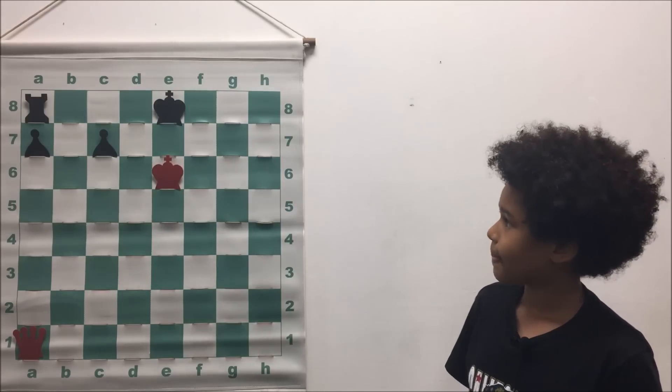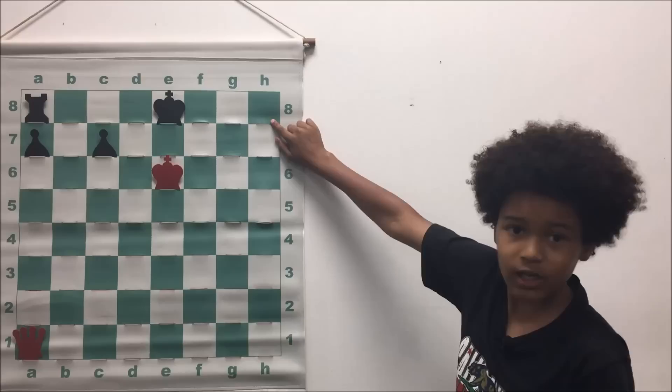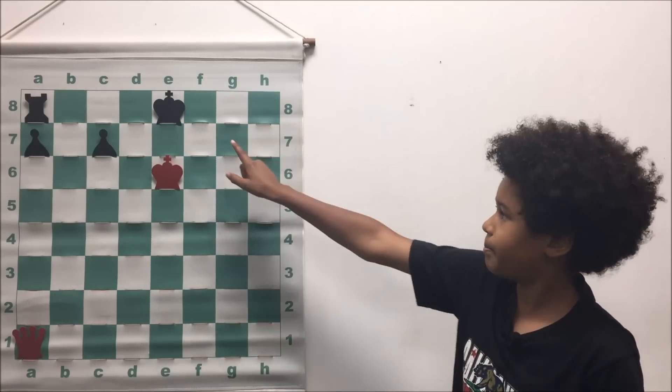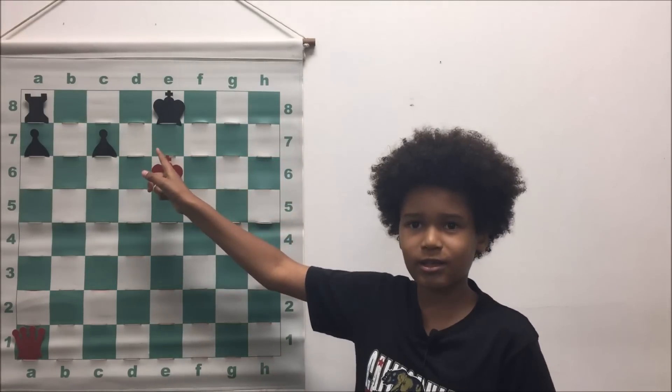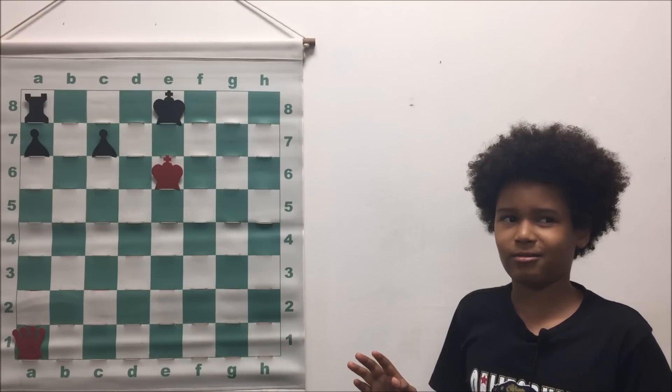Okay, so obviously if the king moves then mate on h8, but black can castle queenside, right? Can he or can he not?